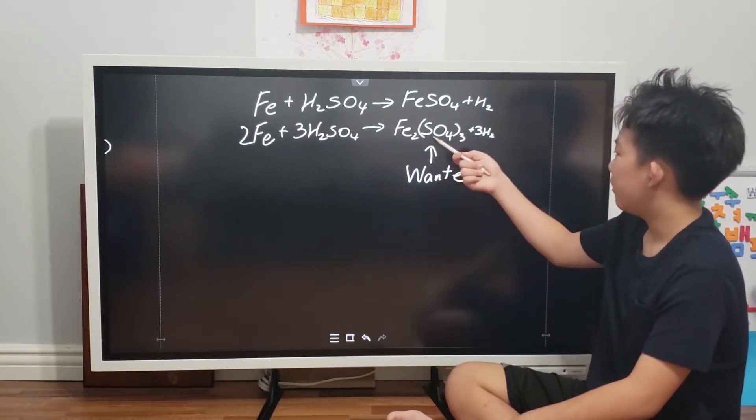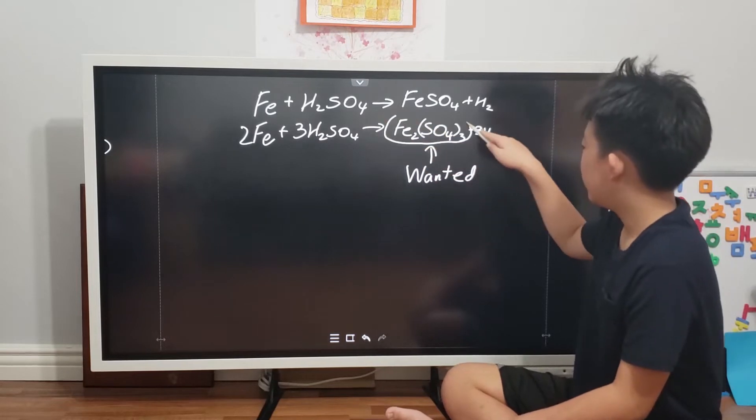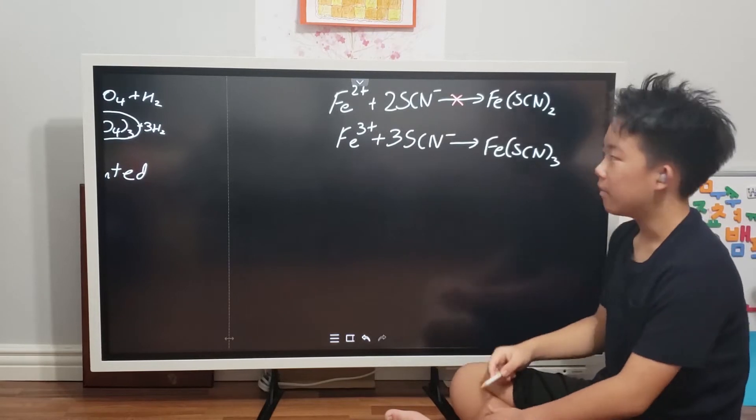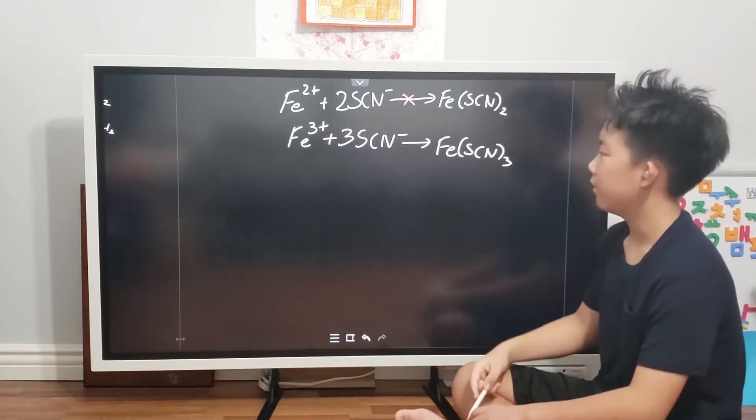However, we want the iron-3 sulfate, which is right here. This is because the bloody red complex will form as iron-3 thiocyanate.